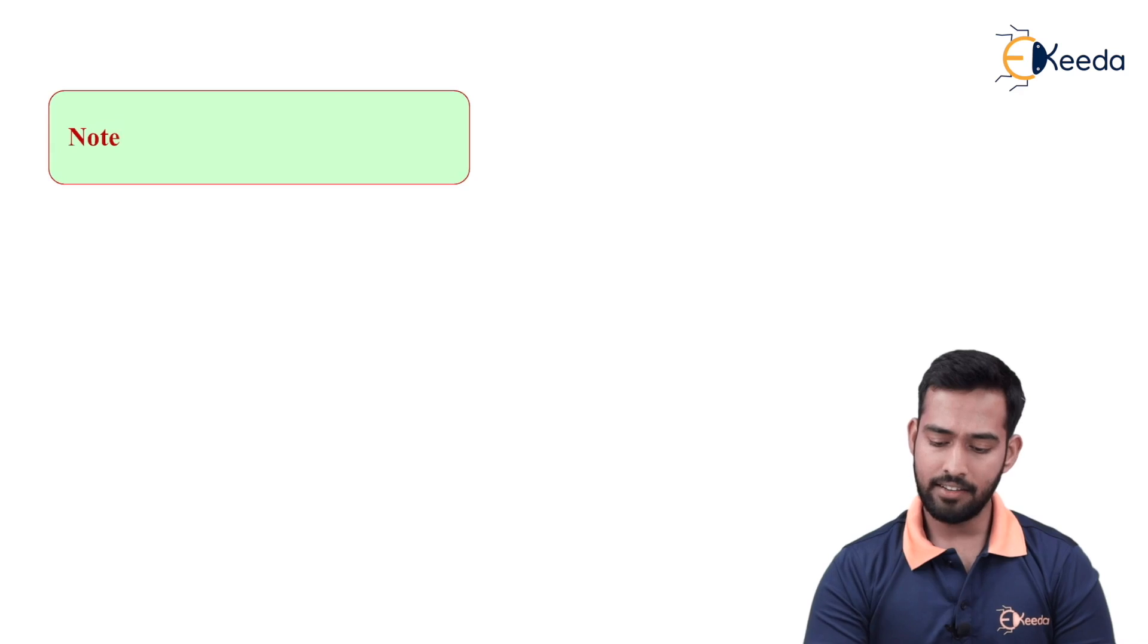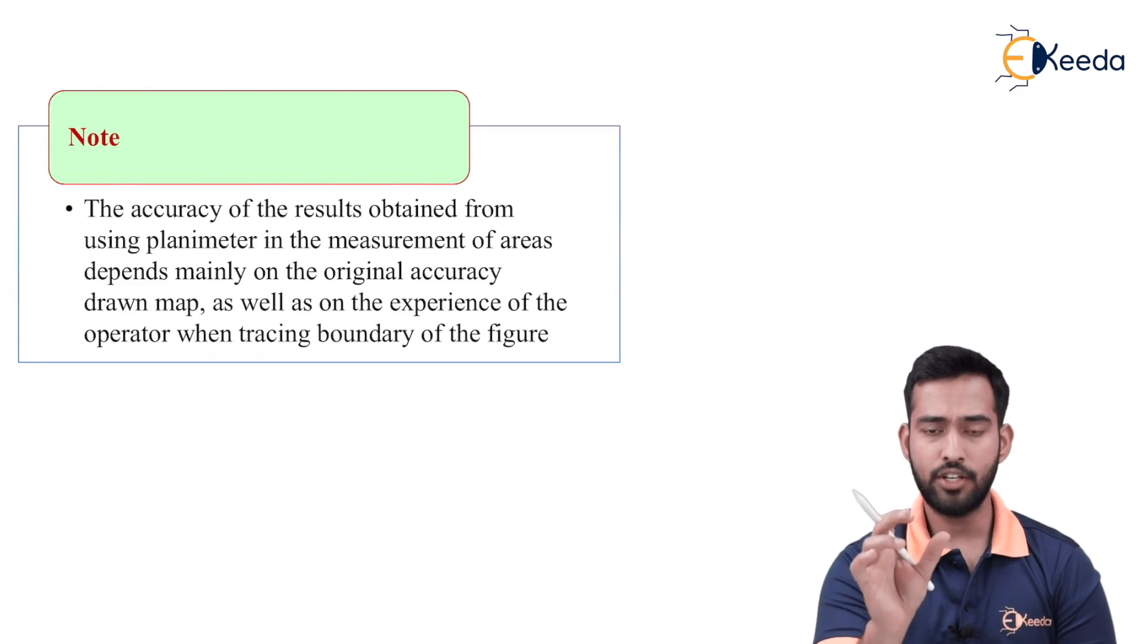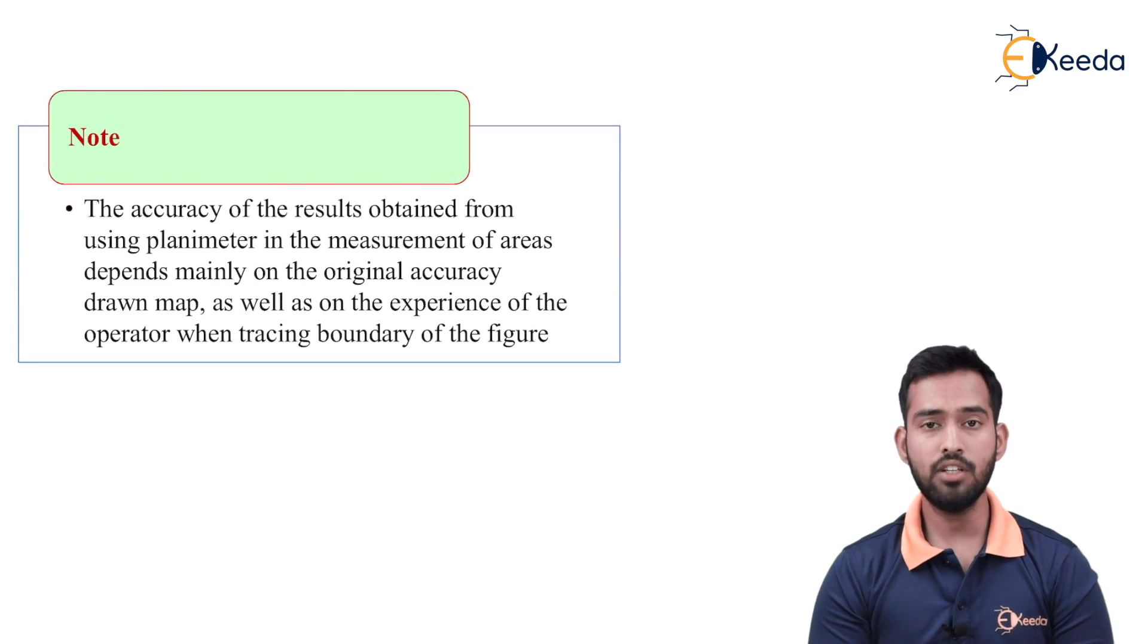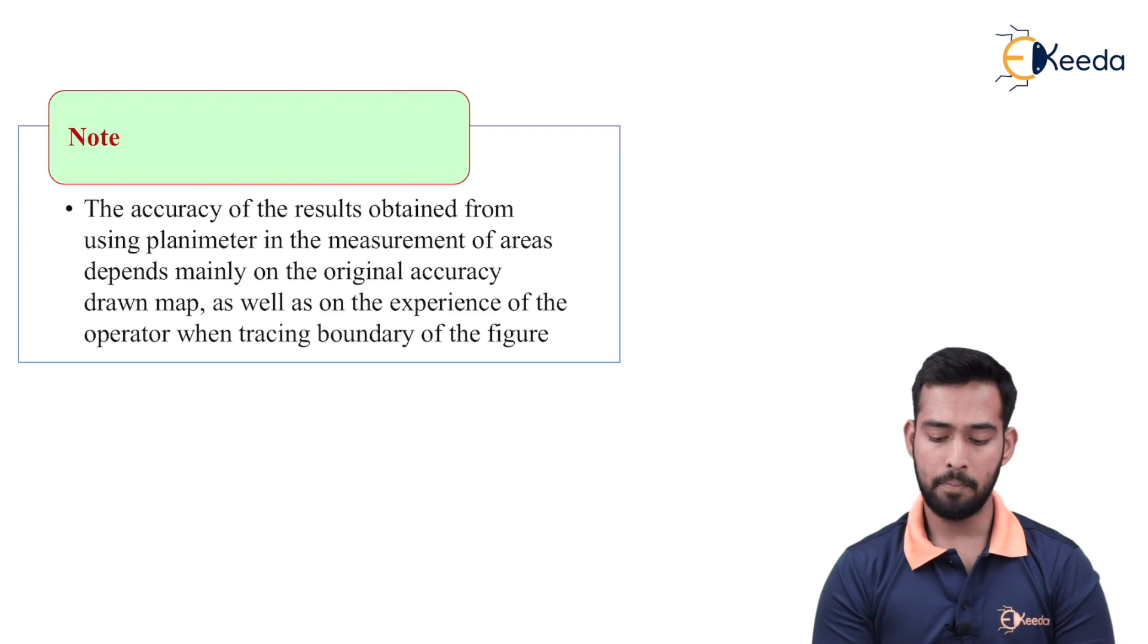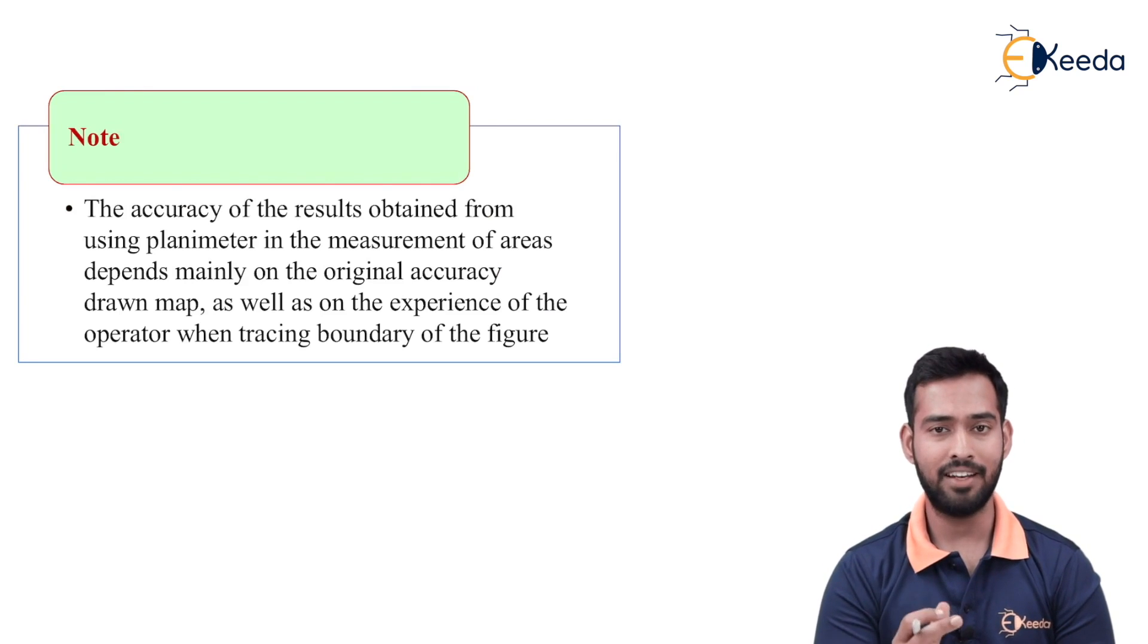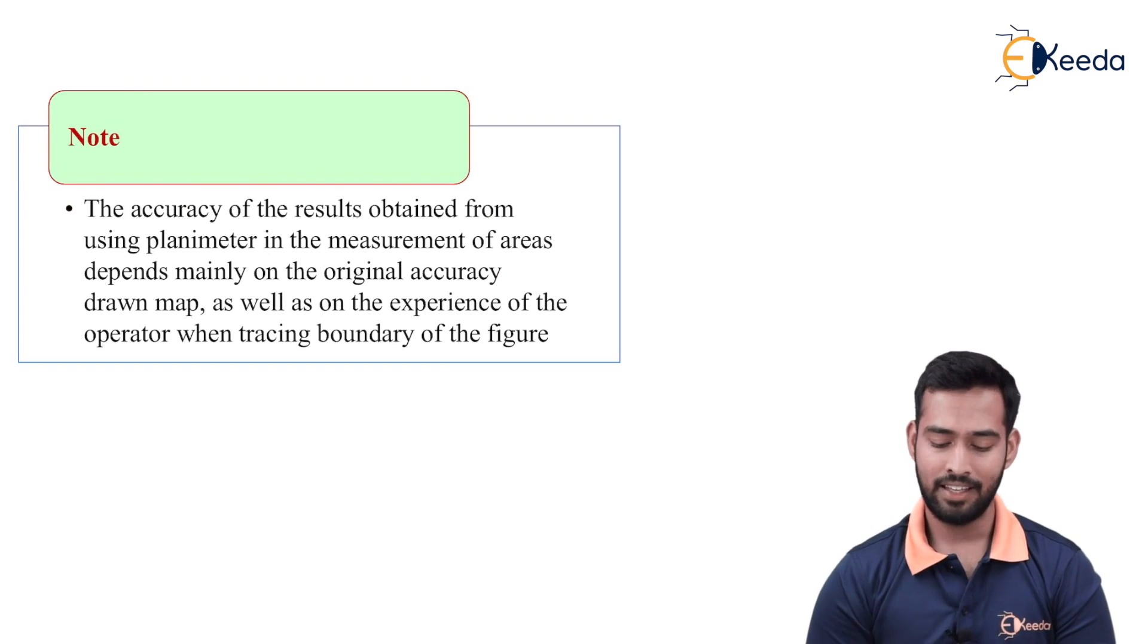In next slide, as we can see, there is a special note. The accuracy of the results obtained from using planimeter in the measurement of areas depends mainly on the originally accurate drawn map. If the maps are drawn with some error, then the area calculated by planimeter will be wrong.